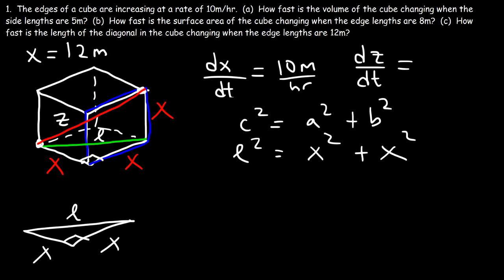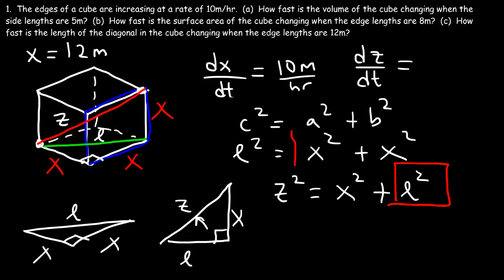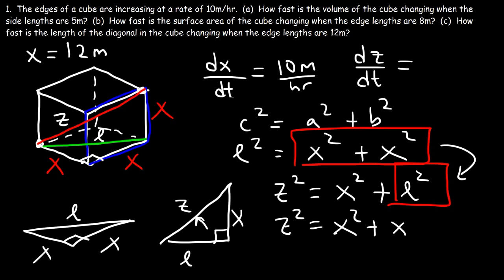Now let's focus on another triangle — a right triangle with sides L, x, and hypotenuse z. So z² = x² + L². We can replace L² with x² + x², giving z² = x² + x² + x², which is z² = 3x². This is the equation relating z and x.